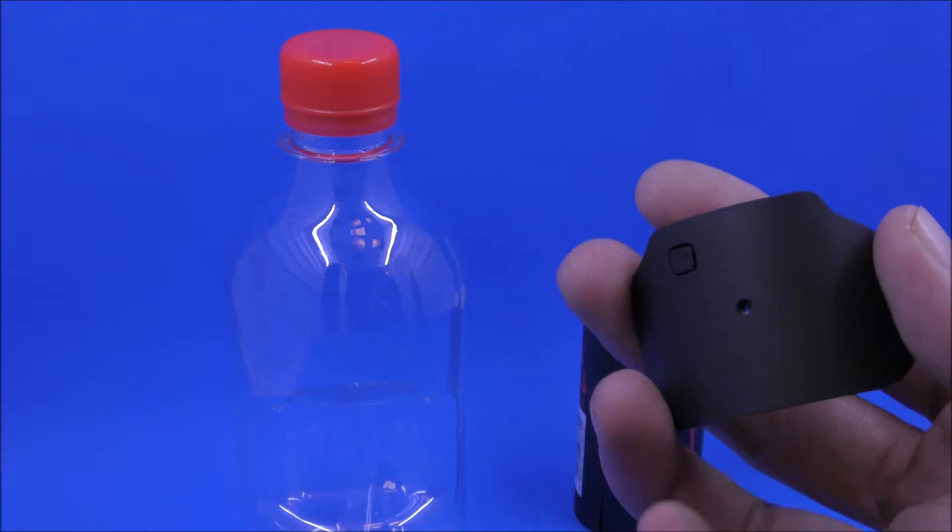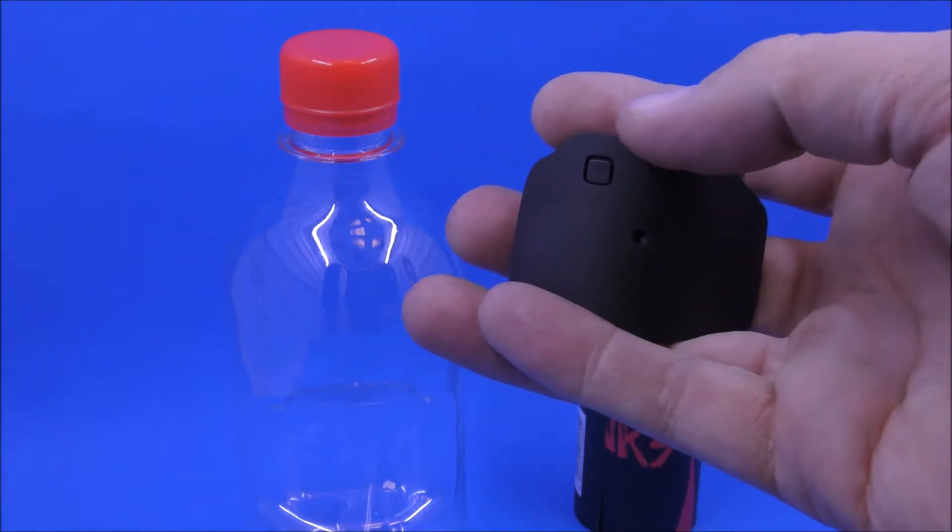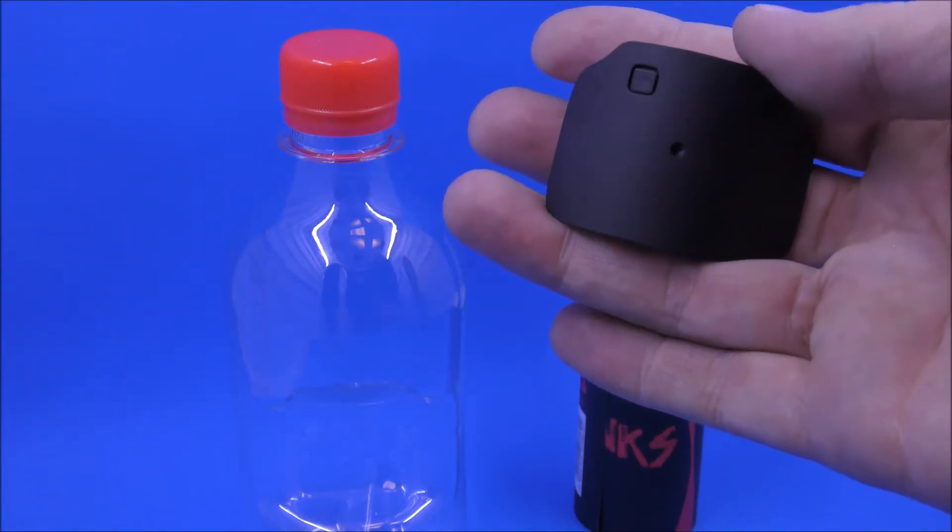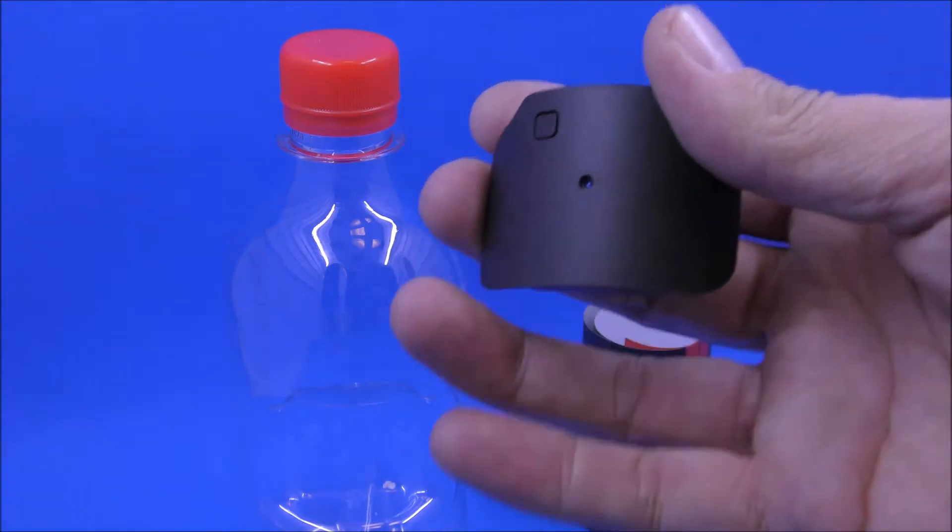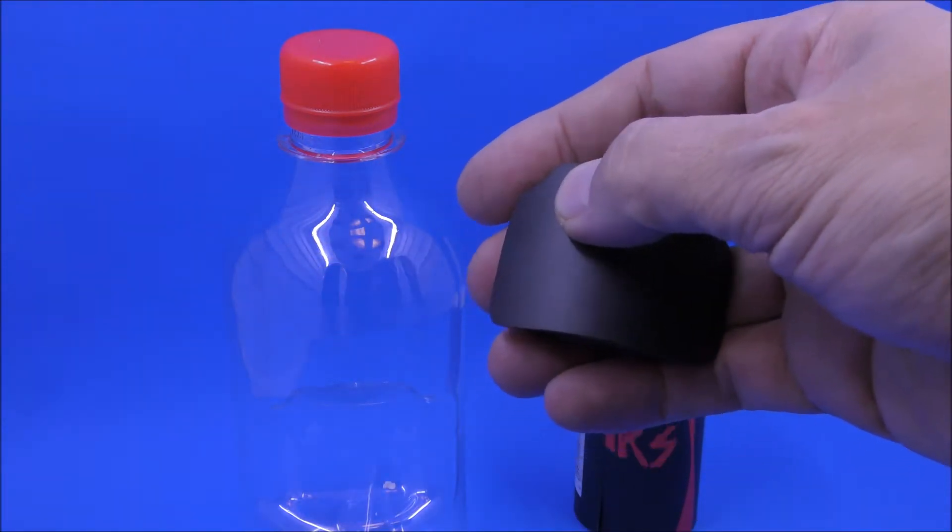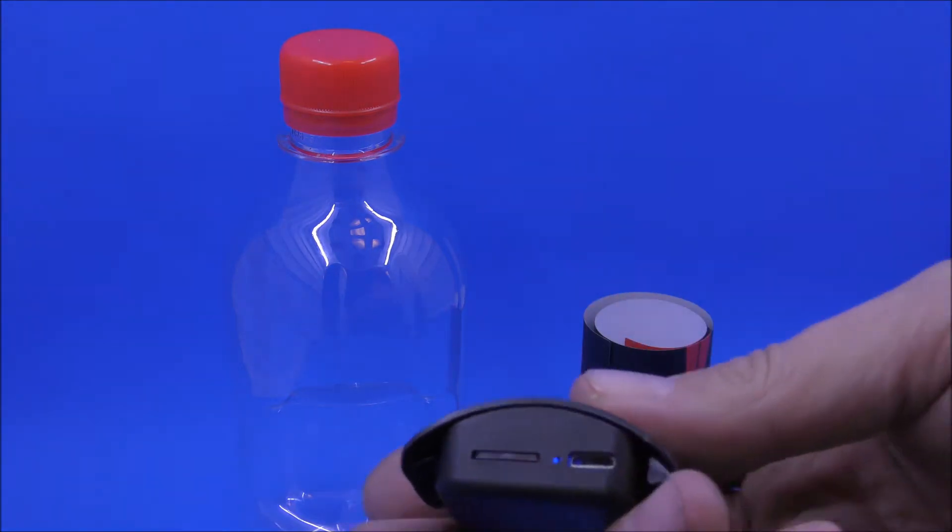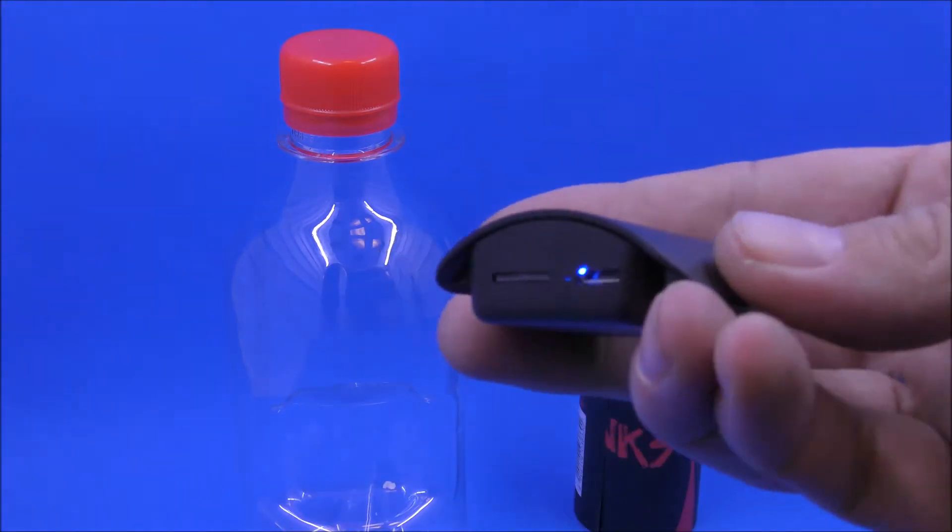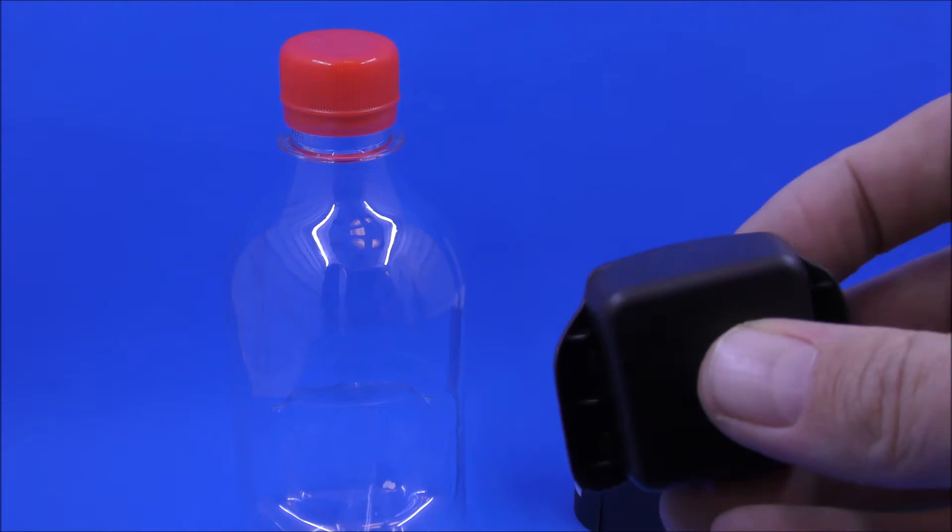And you just remember that if the button is facing up, then that's the right side up for the camera. So when you put it on, you want to make sure that the power button is facing up. Press it again, I'm back to standby mode. So right now, press it one more time.